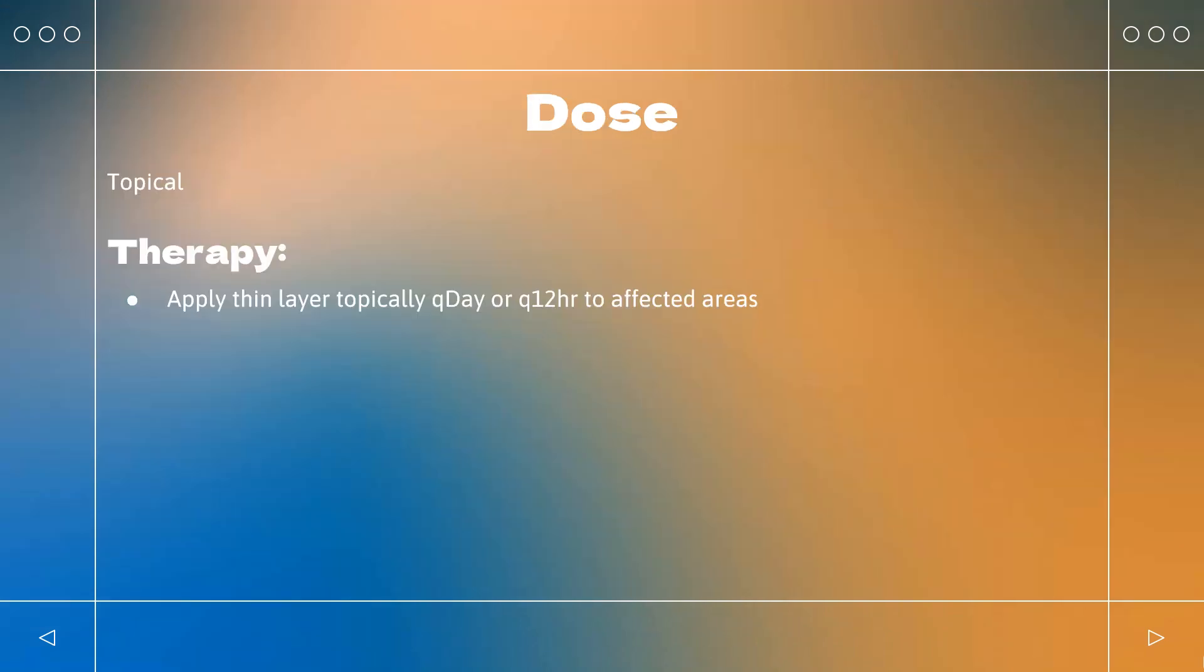Dosing: Corticosteroid-responsive dermatoses: Apply thin layer topically once daily or every 12 hours to affected areas. Psoriasis: Apply thin layer topically once daily or every 12 hours to affected areas. Atopic dermatitis: Apply thin layer topically once daily to affected areas.